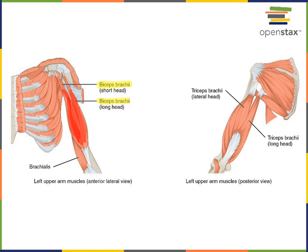There is a similar muscle found on the posterior of the brachial region: triceps brachii. Triceps means three heads — there is a lateral head, a long head, and a medial head of the triceps brachii. The medial head is largely deep underneath the long head but is visible superficially on the medial side distally. The triceps brachii is on the posterior brachial region and performs extension of the elbow joint — the opposite action to biceps brachii.